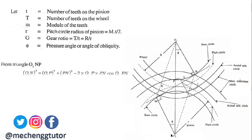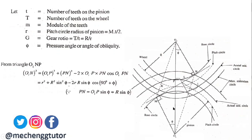We take triangle O1PN and apply the law of cosines (Al-Kashi's rule). We get: O1N² = O1P² + PN² − 2·O1P·PN·cos(∠O1PN). Substituting values: O1P = r, PN = R·sinφ (since PN = O2P·sinφ), and the angle ∠O1PN = 90° + φ, so cos(90° + φ) = −sinφ.